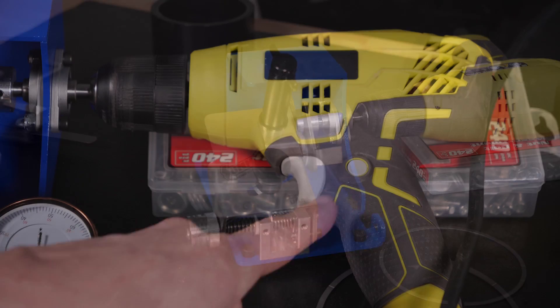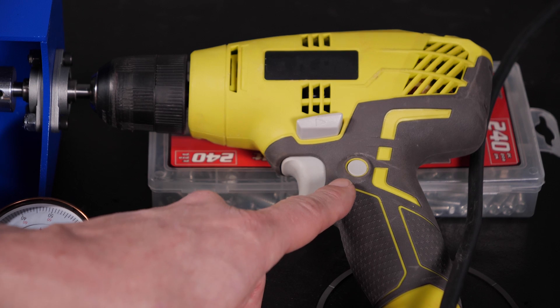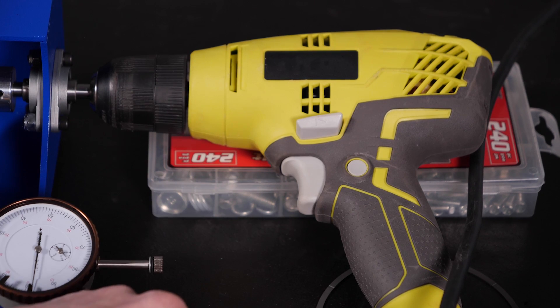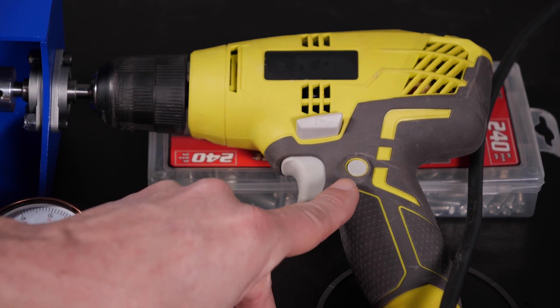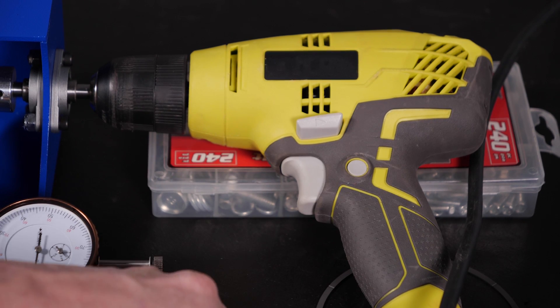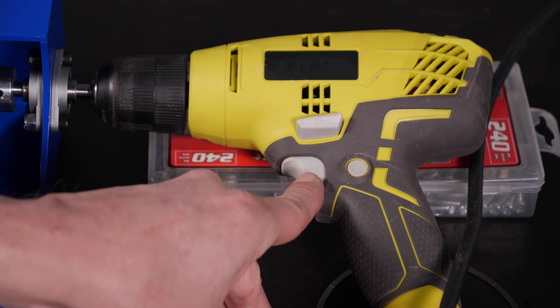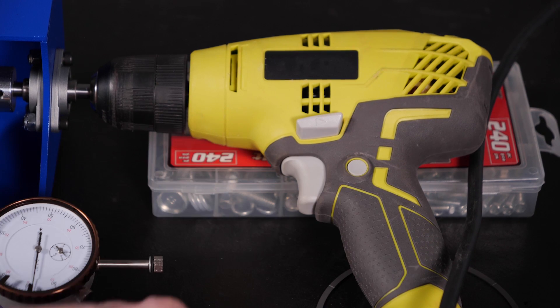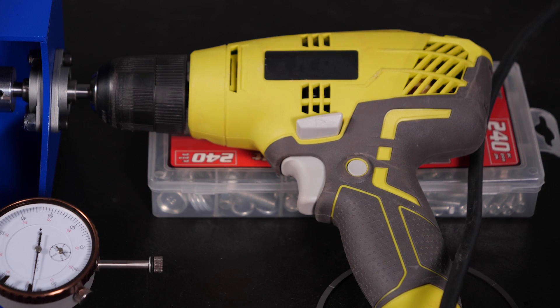The other thing I'll note on this one is this particular drill has a trigger lock, which is nice, makes things easy. Some do not have a trigger lock, in which case it's not the end of the world. Just grab some duct tape or a zip tie or something like that and lock that dude wide open throttle.